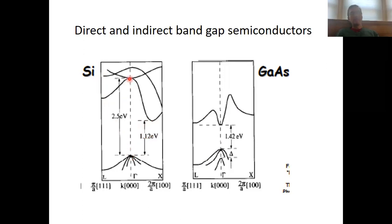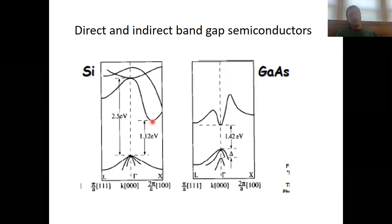We have here a so-called indirect bandgap of 1.1 electron volts. The direct bandgap would actually be the energy difference at the same k-point, which would be 2.5 electron volts. That means that in order to excite an electron from the valence band into the conduction band, you must couple the excitation with a lattice vibration — you have to couple the electronic excitation with a phonon — and only under those conditions can you move an electron from the valence band into the conduction band through the indirect bandgap. This is quantum mechanically less efficient than in a direct bandgap semiconductor.